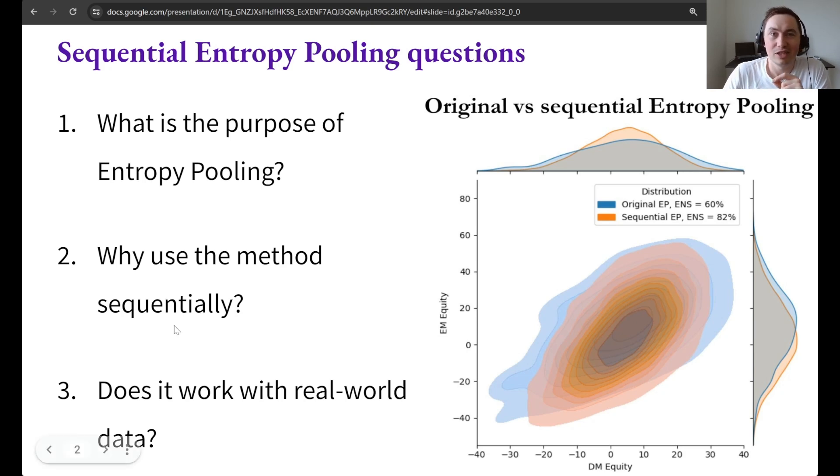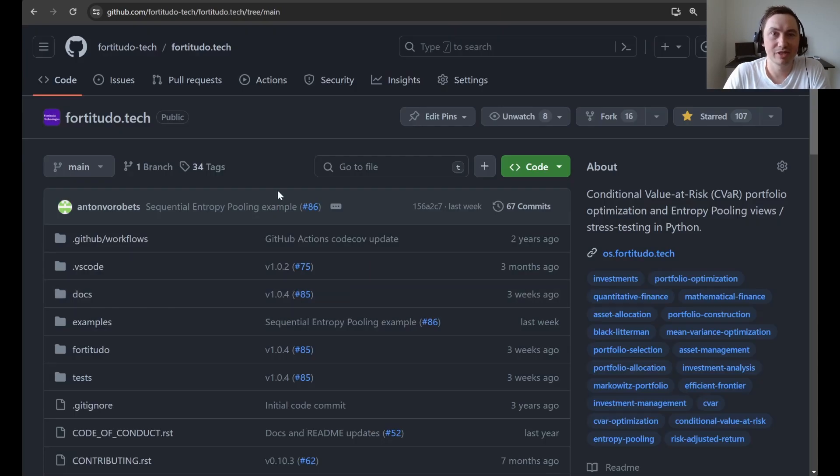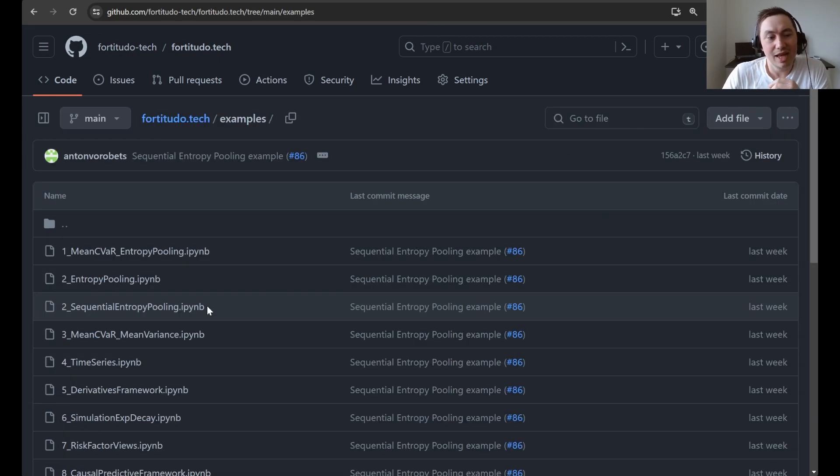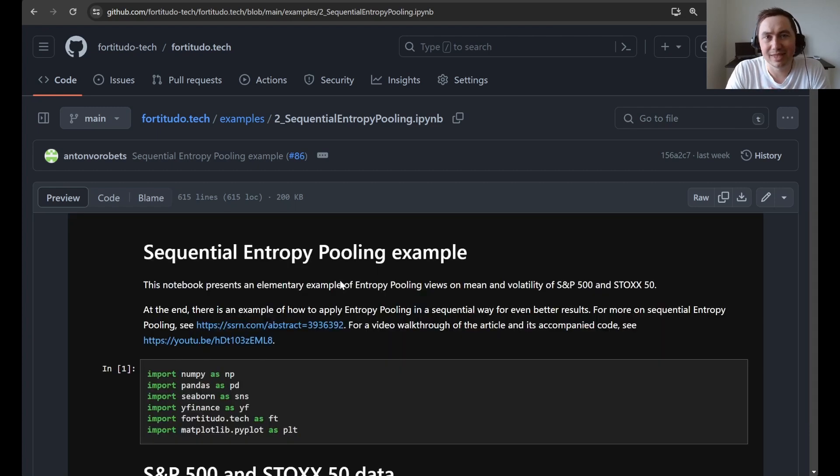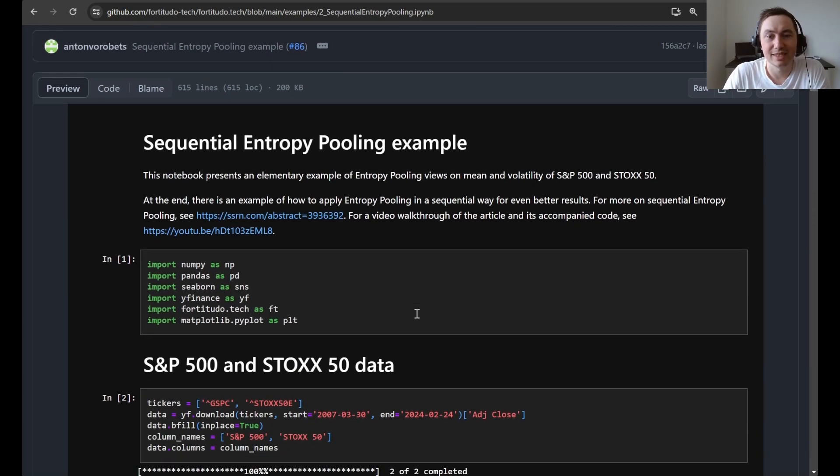Alright. So let's now go back to the code and examine this new bonus example. So as always we start at the front page of the repository and then navigate to examples. And here you can see that I snuck in an example number two extra which is this sequential entropy pooling that we will be going through today. So this example is quite basic. It contains daily data for S&P 500 and Stoxx 50 where we will implement a view on the mean and the volatility.